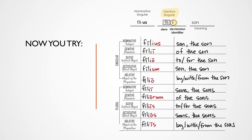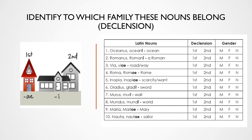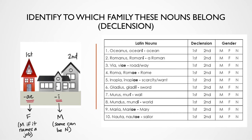So far, we have two different families. First declension, which we identify with that ae. And then the second declension, which we identify with the eye with a macron. Each of these declensions also has its own gender. First declension is generally feminine — remember the one exception is if it names a job, then it's masculine. And these second declension nouns we're learning right here are masculine. Some of them can be neuter, and we'll talk about that later. But for now, we're just identifying masculine second declension nouns.